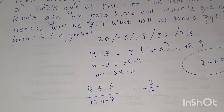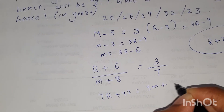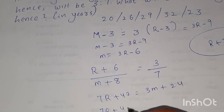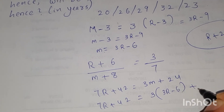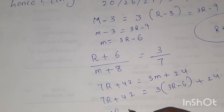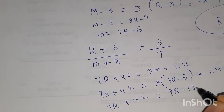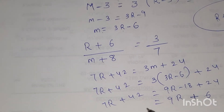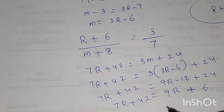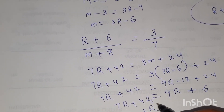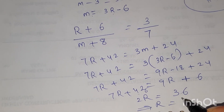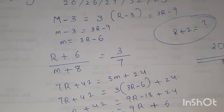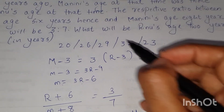We got the equation: 7R plus 42 is equal to 3M plus 24. And we know the value of M, that is 3R minus 6. So 7R plus 42 is equal to 3 times 3R minus 6 plus 24. That gives 7R plus 42 is equal to 9R minus 18 plus 24, which is 9R plus 6. So 9R minus 7R is 2R. 2R is equal to 42 minus 6, which is 36. So R is equal to 18. The question asks for R plus 2, so the answer is 20. Renu's age 2 years hence will be 20 years, and the option is the first one.